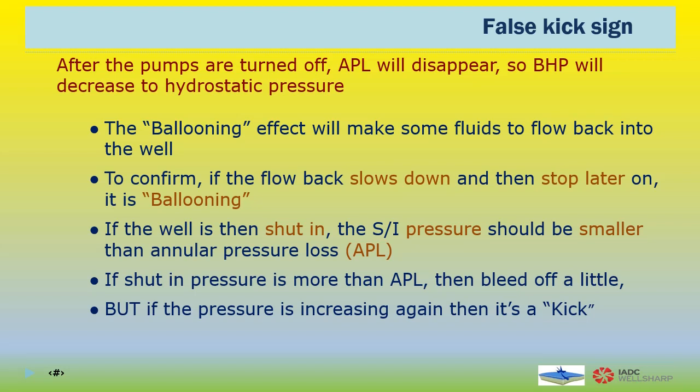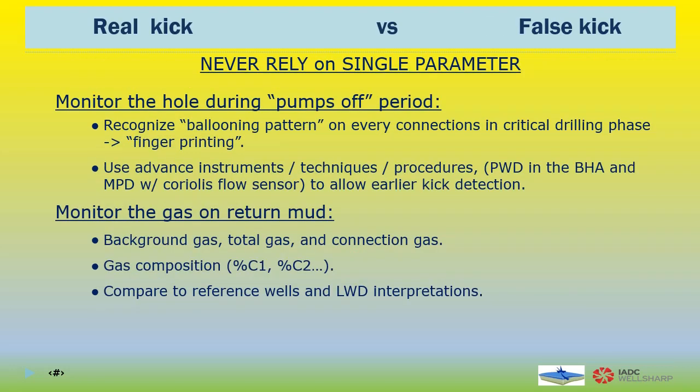If the well is then shut in, the shut-in pressure should be smaller than the annular pressure loss (APL). If shut-in pressure is more than APL, then bleed off a little and observe. But if the pressure increases again above the APL, then it's a kick. Knowing the difference between real kick signs and false kick signs is paramount. Never rely on a single parameter. Monitor the hole during pumps-off period. Recognize ballooning patterns on every connection in critical drilling phases by performing fingerprinting. Use advanced instruments, techniques, and procedures to allow early kick detection — MPD with Coriolis flow sensor and PWD in the BHA, for example, could be used to enhance kick detection.